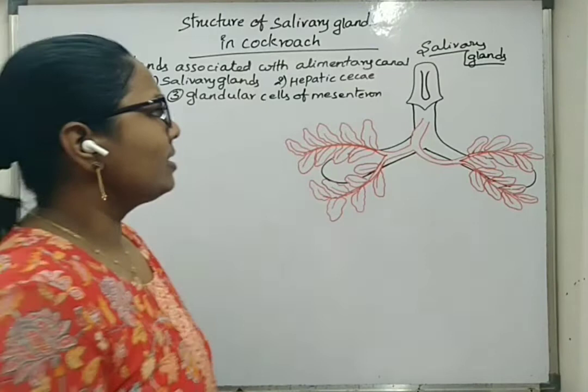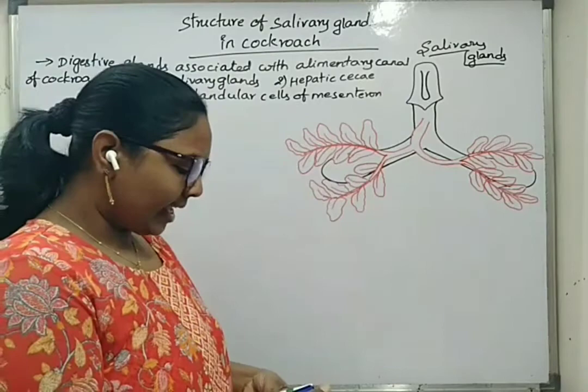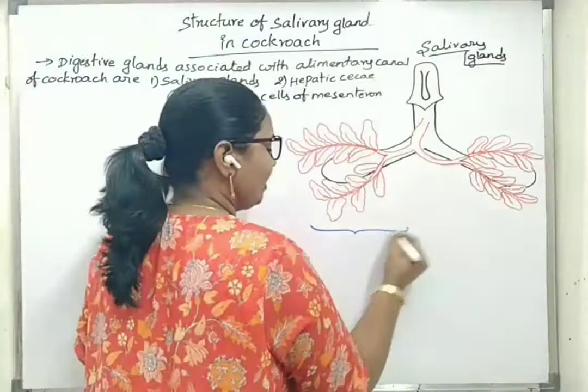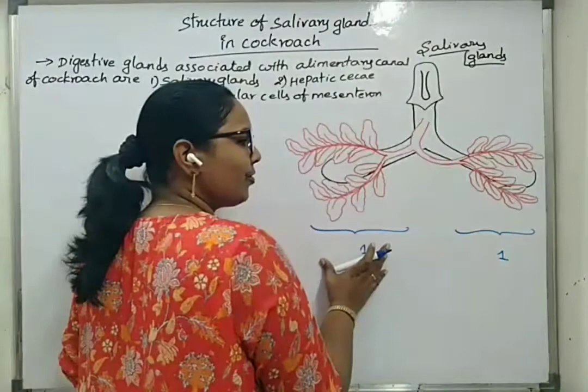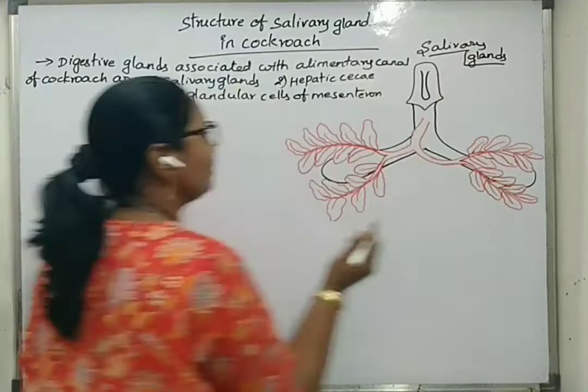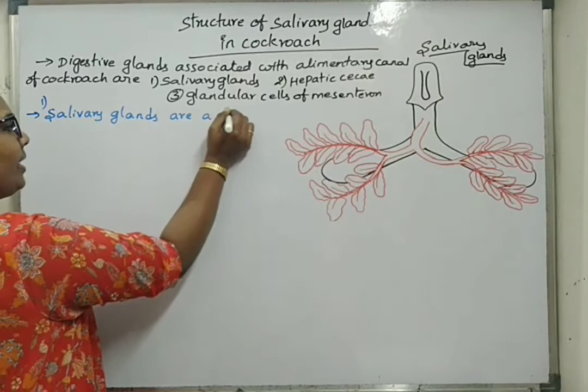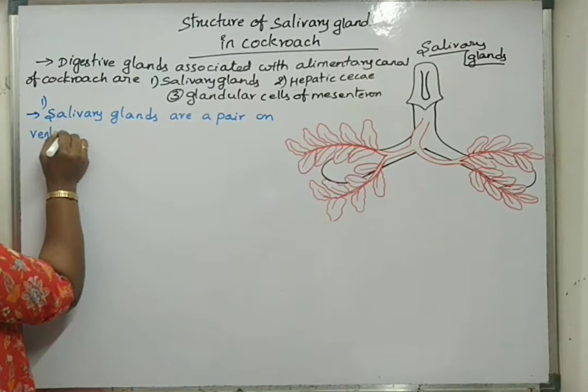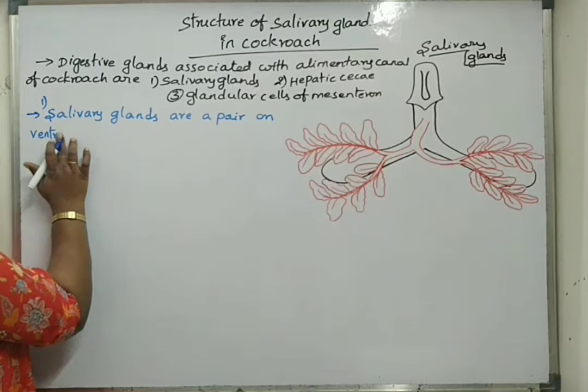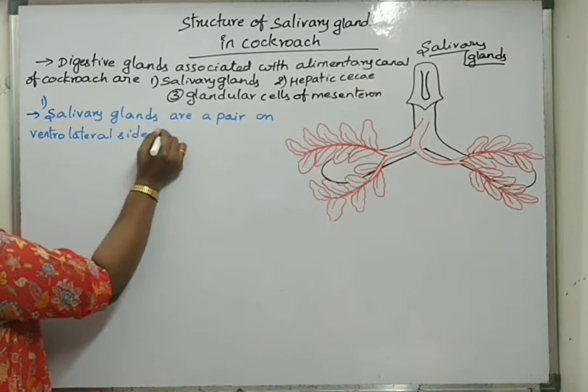Coming to the first one — salivary glands. Salivary glands consist of a pair of salivary glands attached on the ventrolateral side. A pair means two in number — this is one and the other one. So salivary glands of cockroach are a pair, located on the ventrolateral side of the crop.